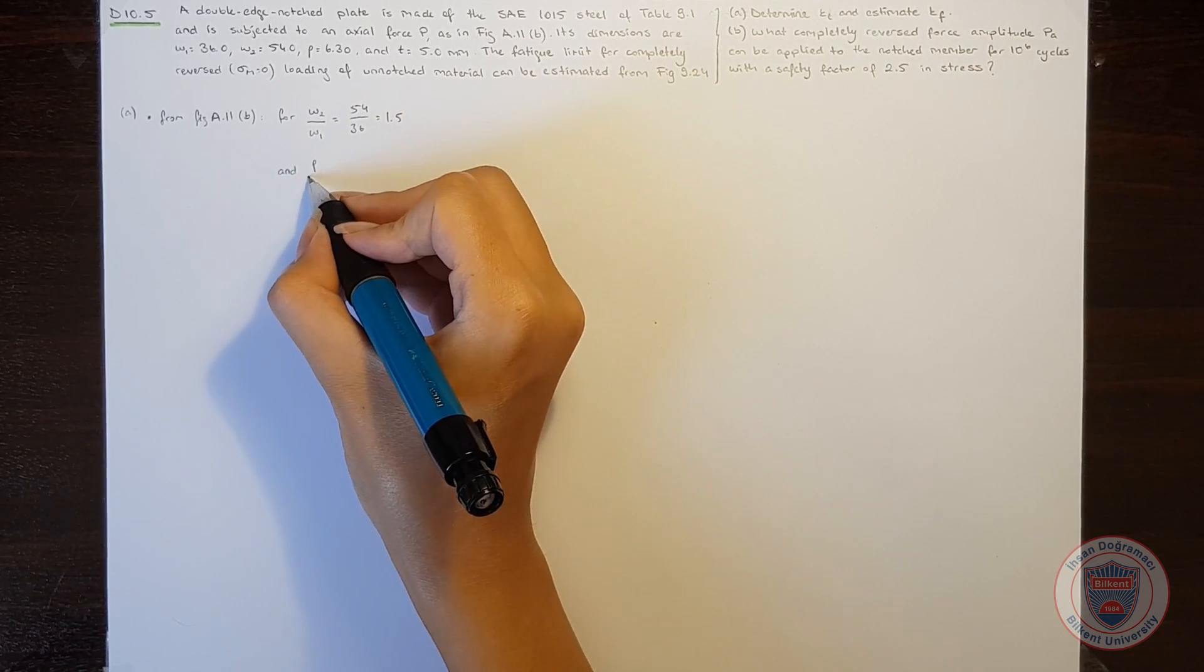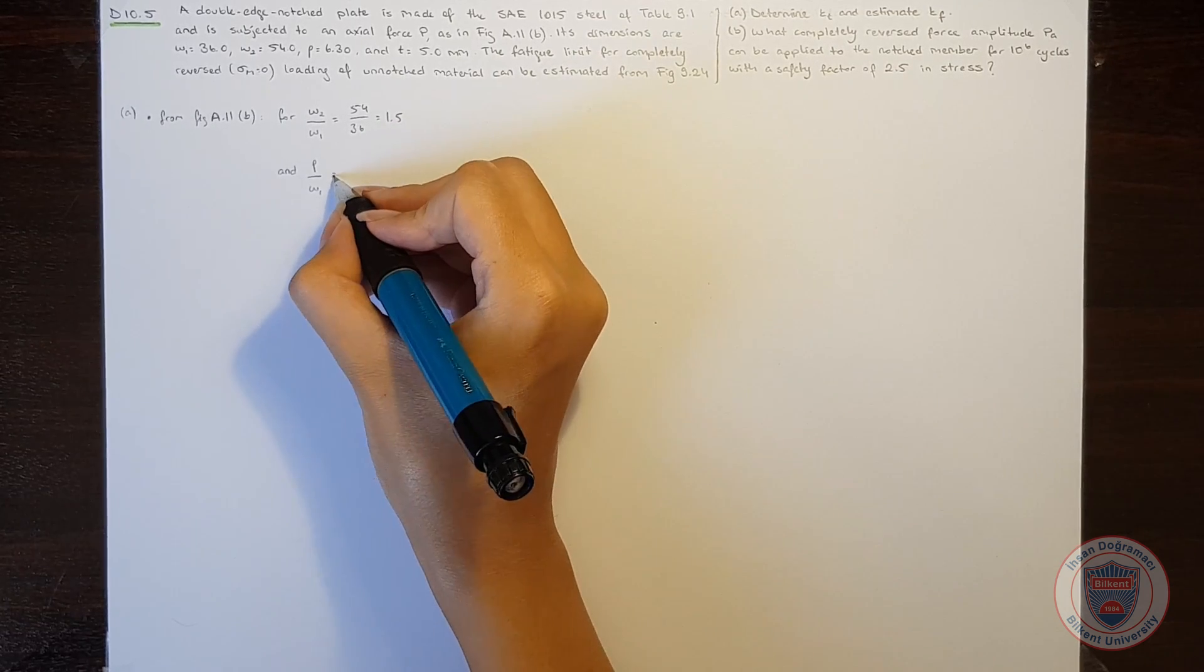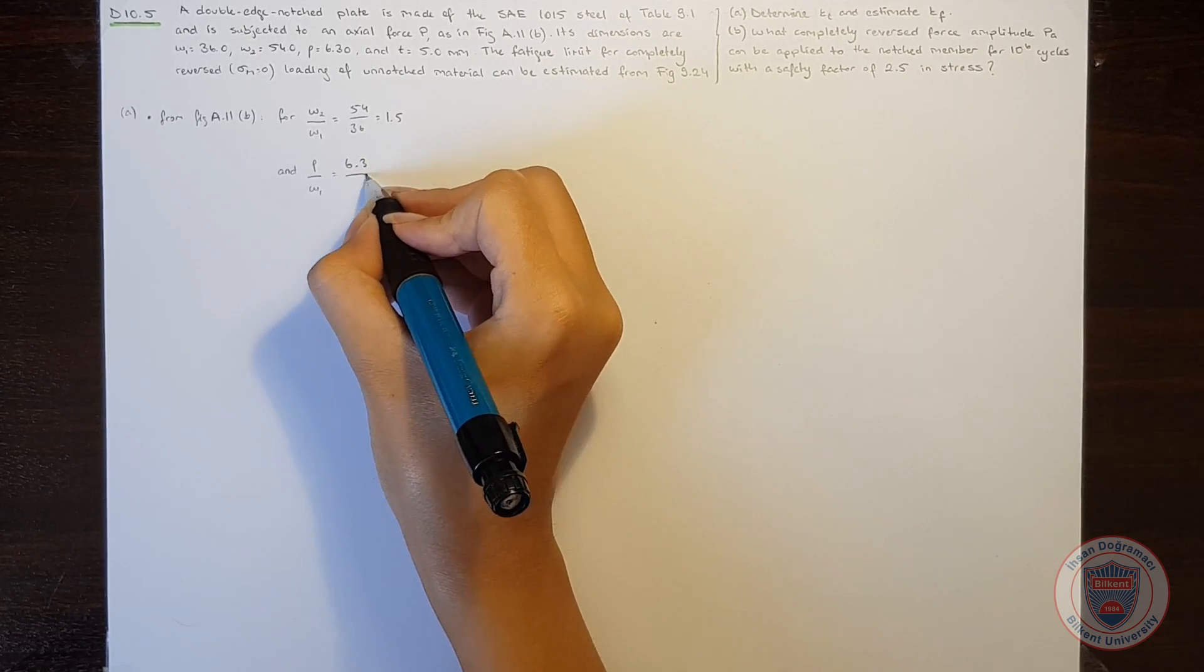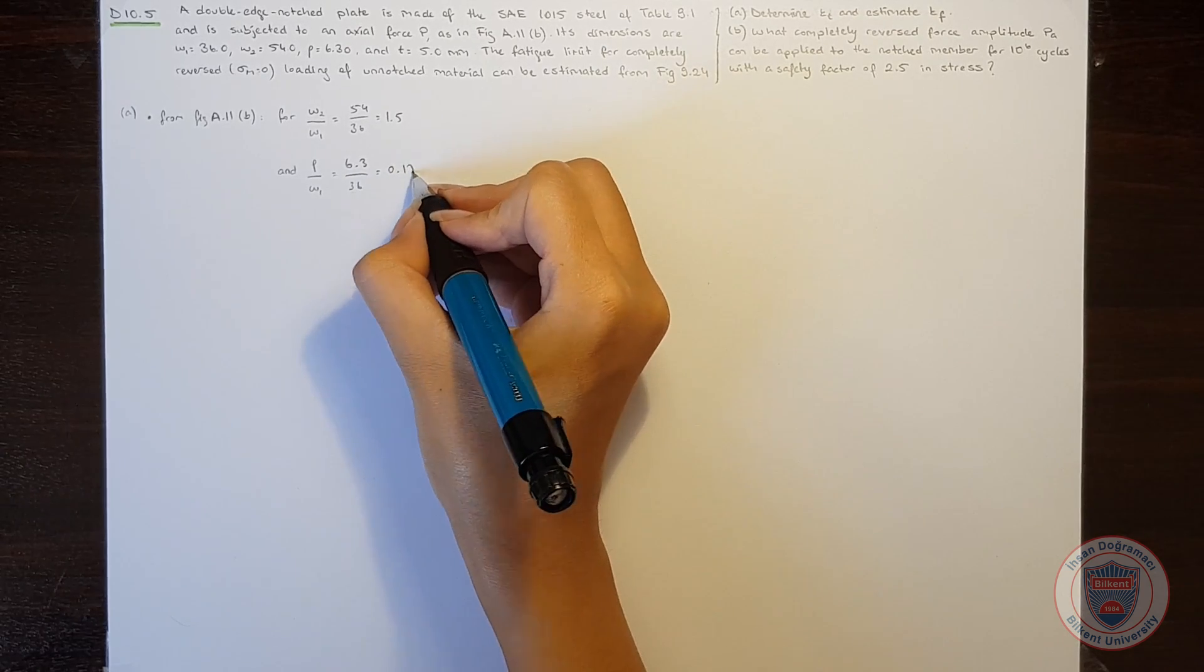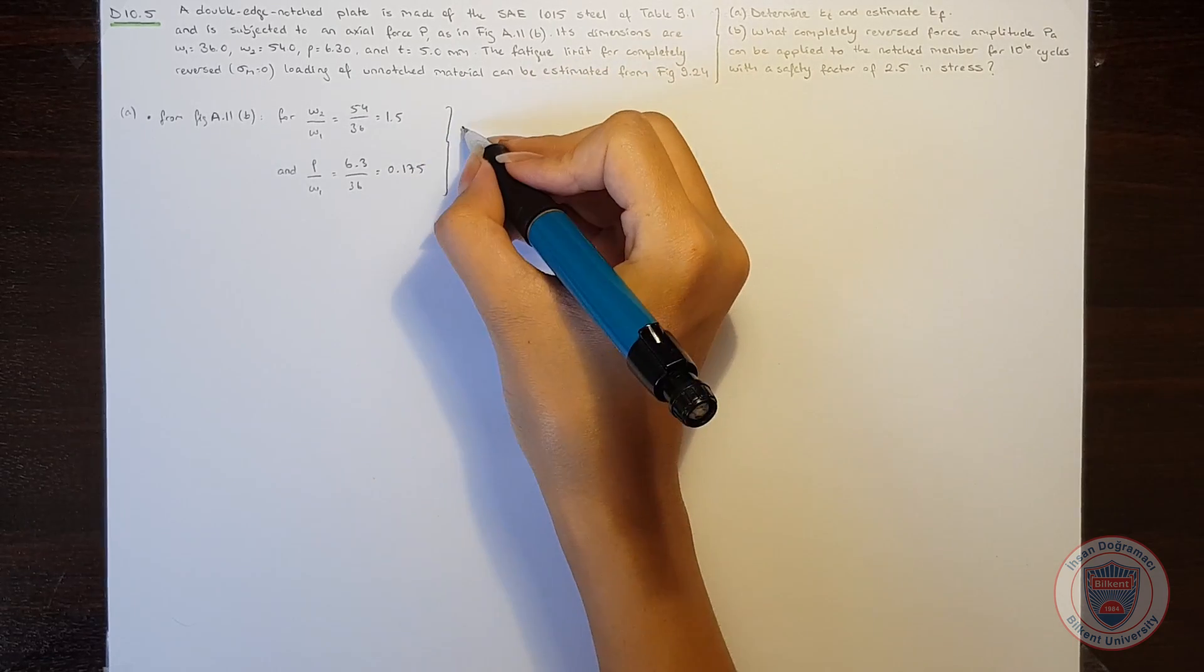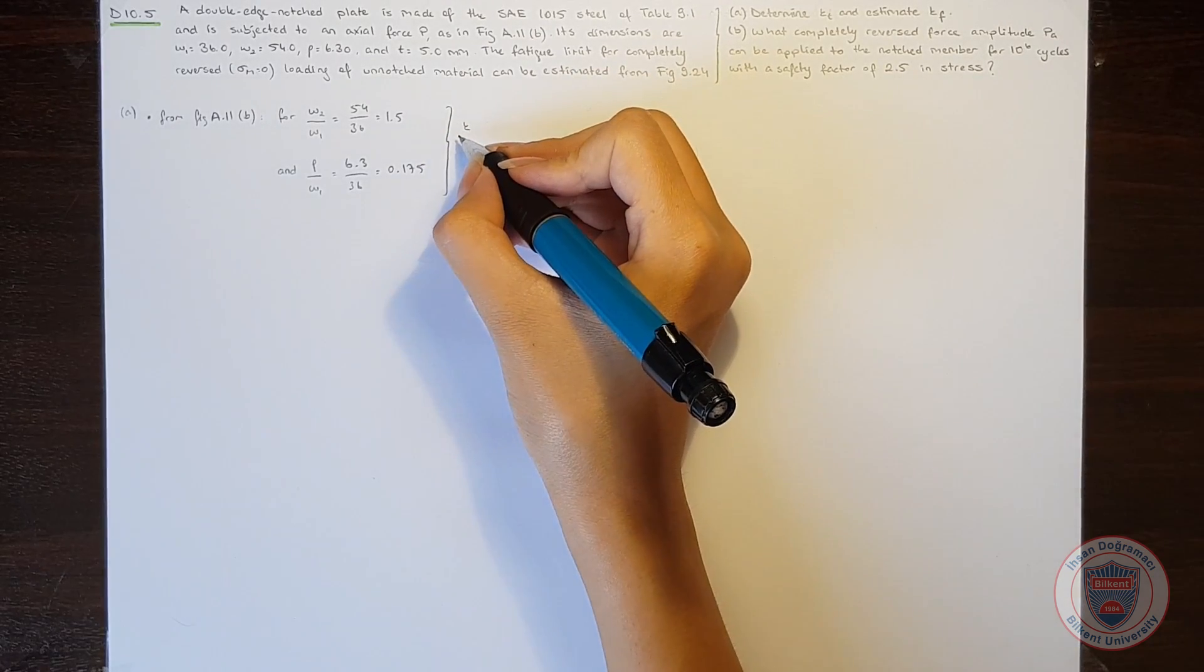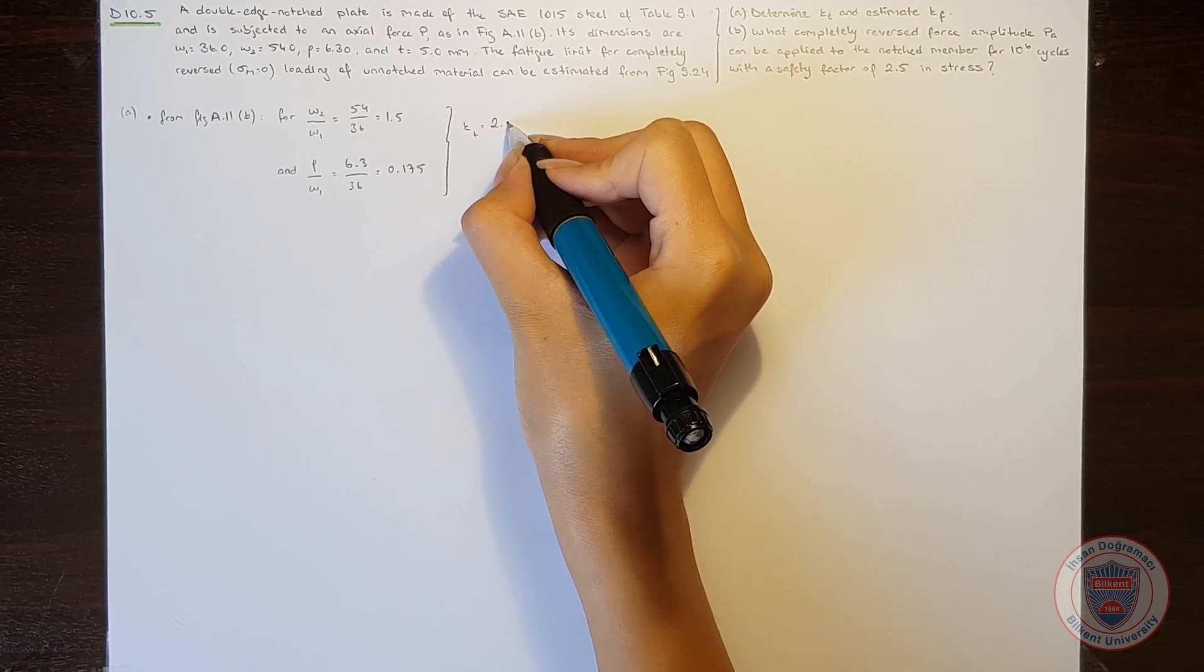and for the notch radius over the first width, which is 6.3 over 36 in our case, and it is equal to 0.175, the stress concentration factor becomes 2.35.